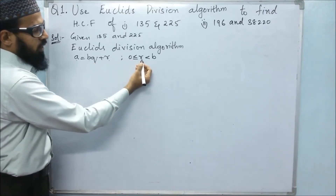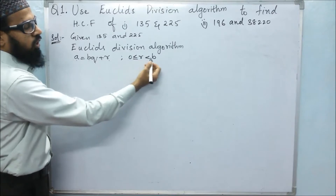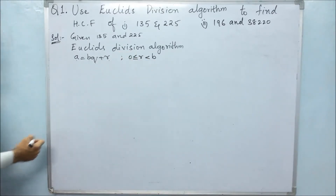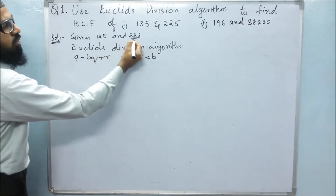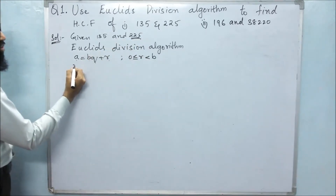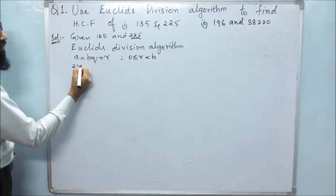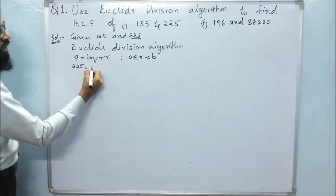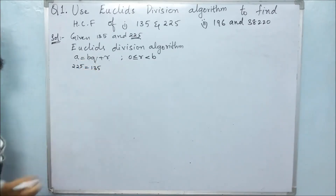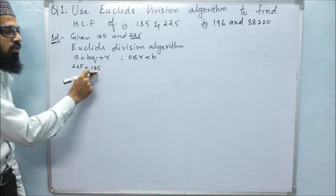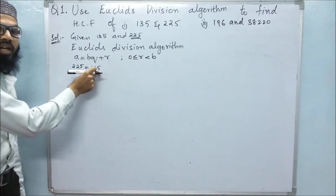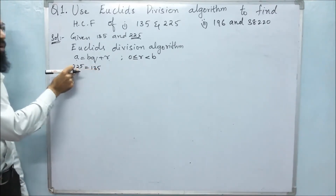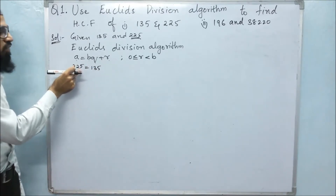The remainder should be greater than or equal to 0 and less than the divisor. The bigger number goes in place of A, so 225 equals 135 into Q. We have to check by multiplying 135 with some number to get the nearest value to or equal to 225.